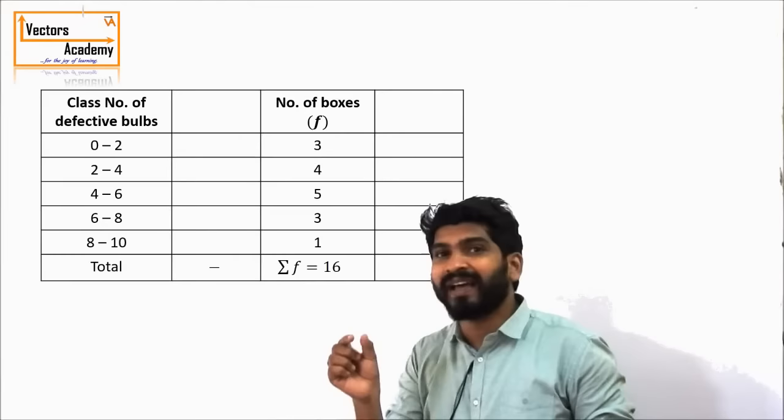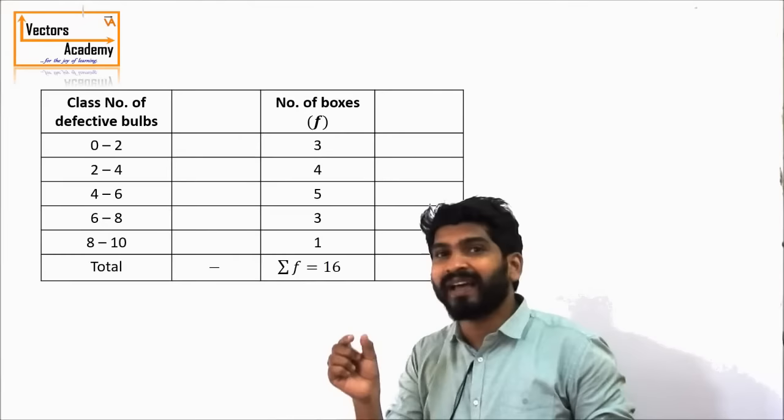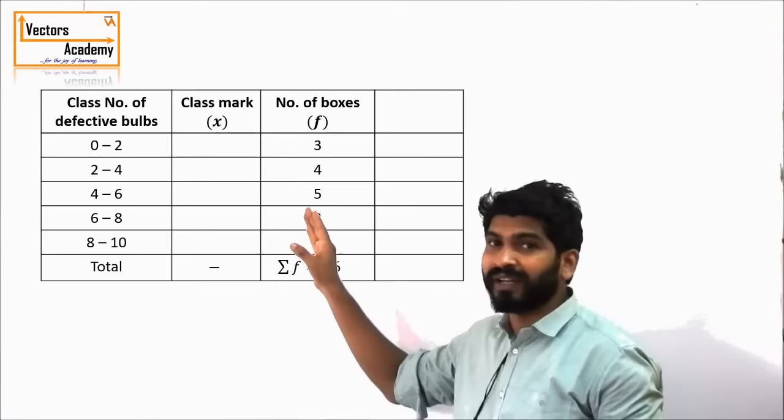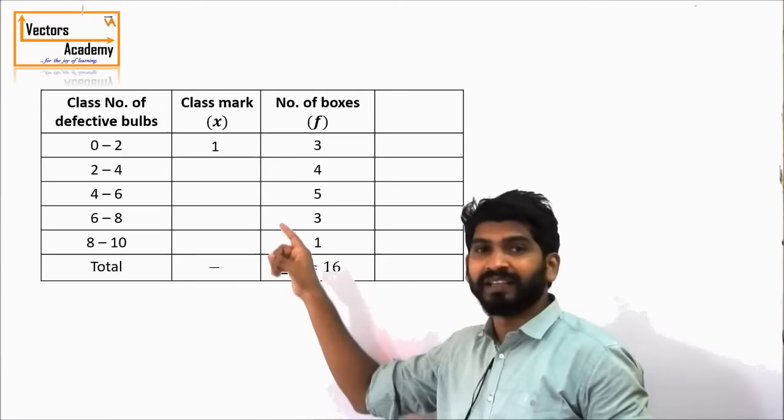Class mark means the central value of the class. So the number of defective bulbs from 0 to 2 has a central value of 1, meaning the class mark of the first class is 1. Similarly, the class mark of the second class will be 3, and so on. Once you have calculated the class marks, we can start calculating the mean.